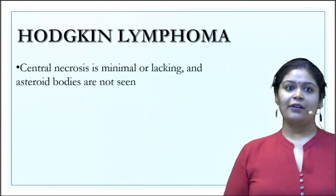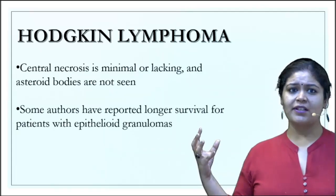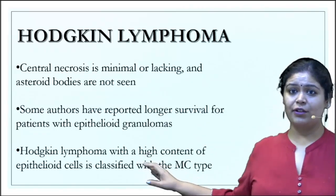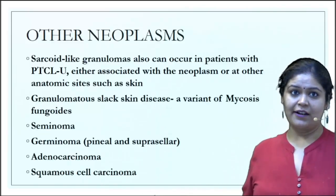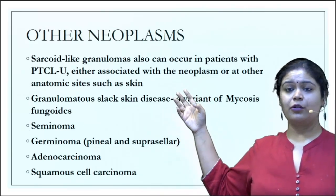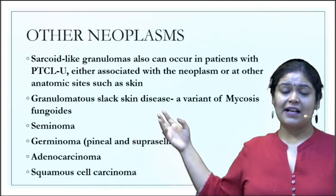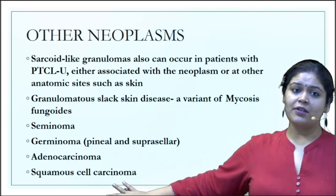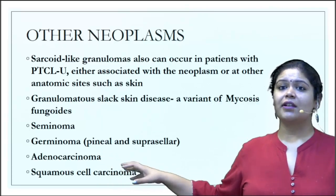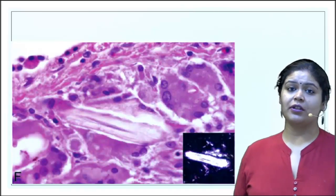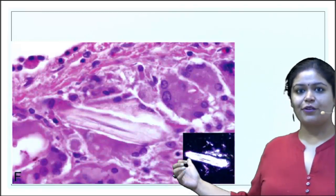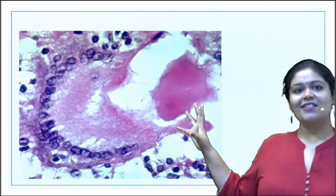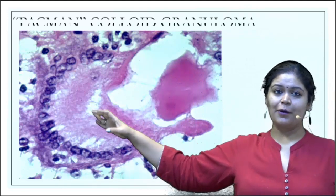Hodgkin lymphoma is a neoplasm associated with granulomas — no necrosis, no inclusion bodies. Patients with epithelioid granulomas have longer survival, possibly reflecting an immune response; a very high number of epithelioid cells classifies Hodgkin's as mixed cellularity. Other neoplasms associated with granulomas include peripheral T-cell lymphoma, granulomatous slack skin disease (a variant of mycosis fungoides), seminoma, dysgerminoma, germinoma, adenocarcinoma, and squamous cell carcinoma. For the latter two, products like mucin and keratin can act as foreign bodies, triggering a granulomatous reaction. Interesting examples include talc granuloma under polarizing microscopy, hair granuloma, and colloid granuloma.